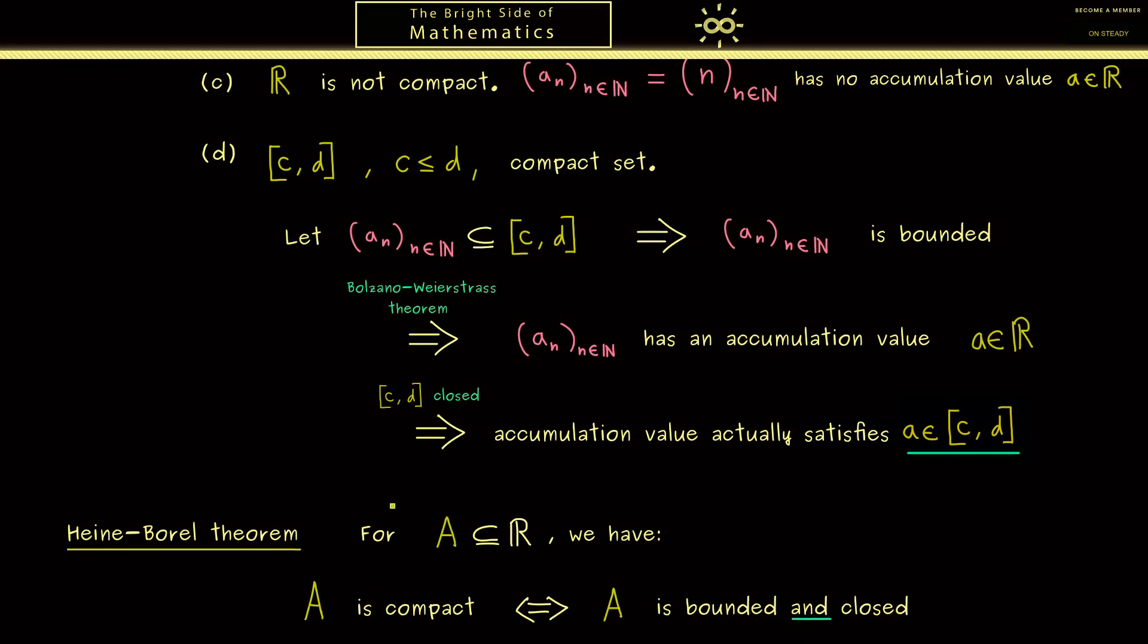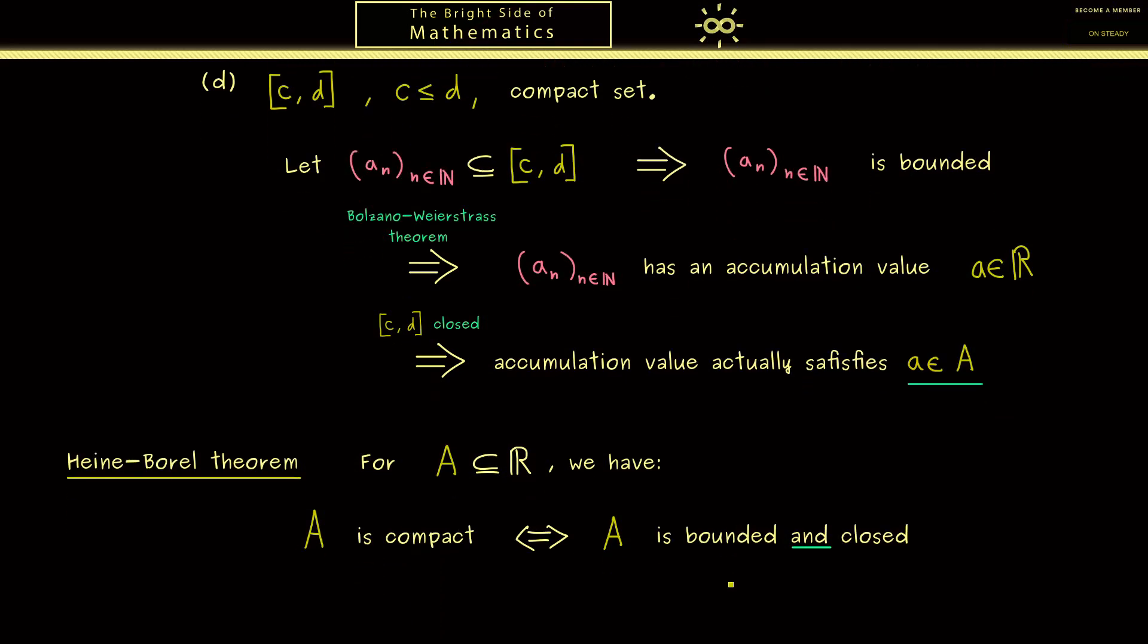This theorem is a very good result for us because it tells us that we can substitute the complicated notion of compactness with the simpler notions of boundedness and closedness. Ok so this is the Heine-Borel theorem which holds for the real numbers and you really should remember it.